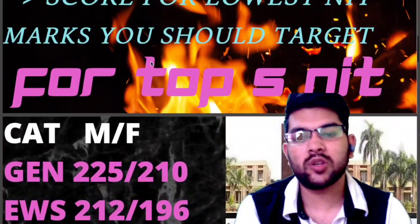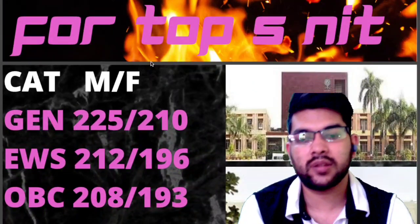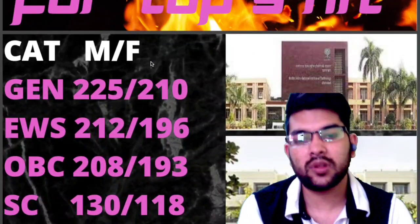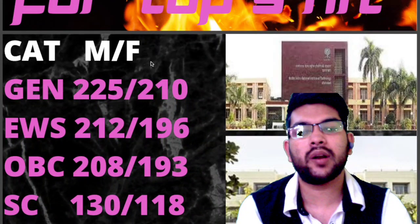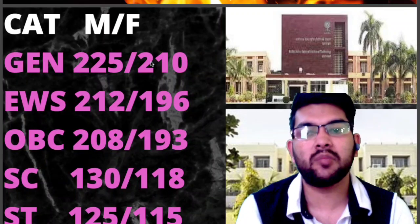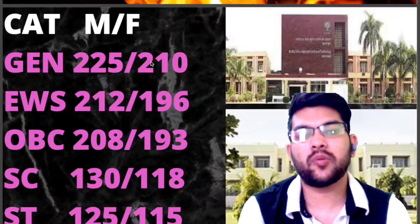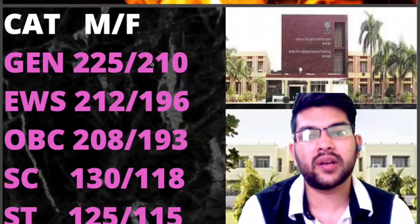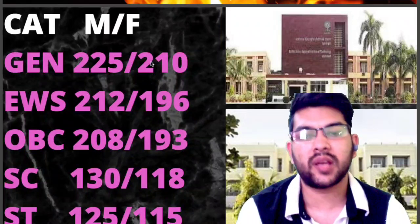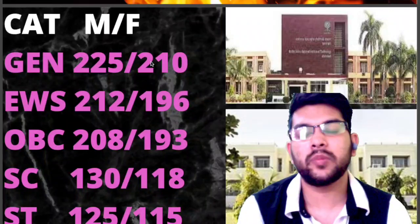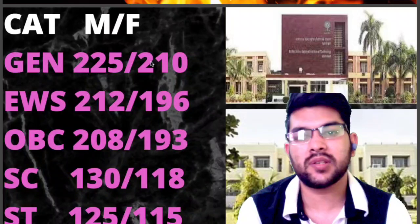For OBC, 208 (male) and 193 (female) marks are required. For SC category, 130 (male) and 118 (female), and for ST category, 125 (male) and 115 (female) marks. This is based on the current year trend, number of students appearing, and difficulty level — after considering all factors, these are the safe scores for top 5 NITs to get the CS branch.